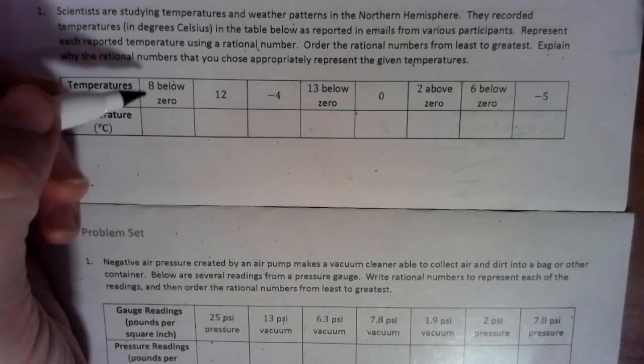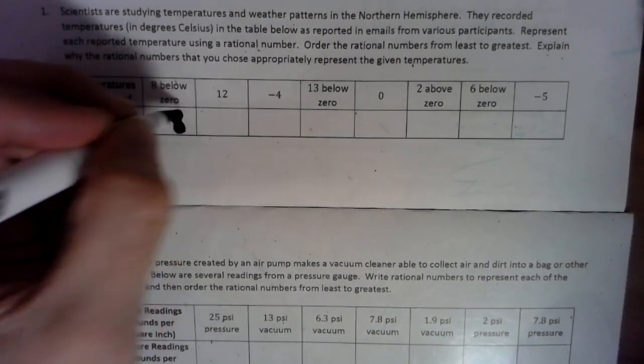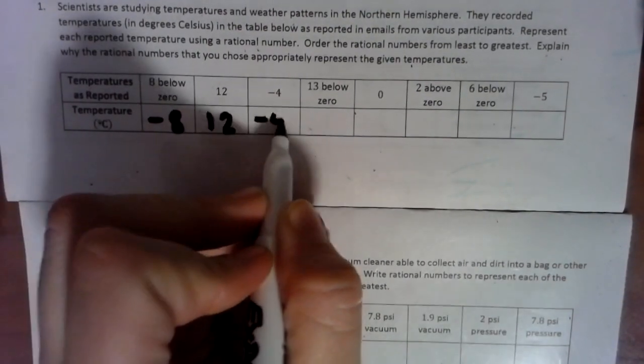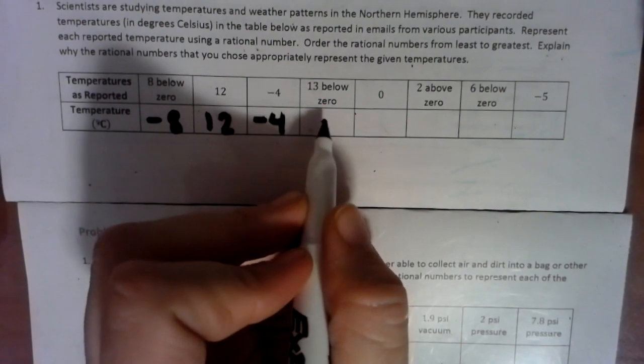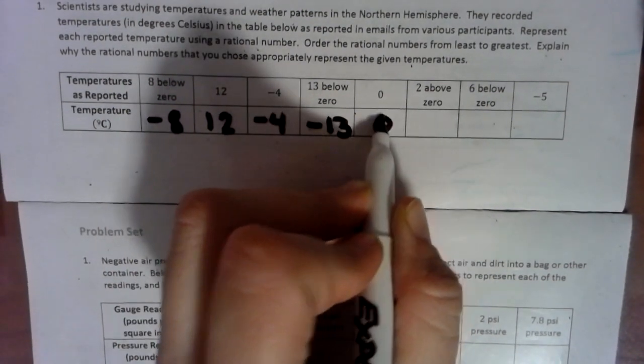So first of all, we're going to convert all of these. So it says 8 below 0, so 8 below 0 would be negative 8. 12 was just a positive 12. Negative 4 is a negative 4. 13 degrees below 0 would be negative 13. This would be 0. 2 above 0 would be a positive 2.